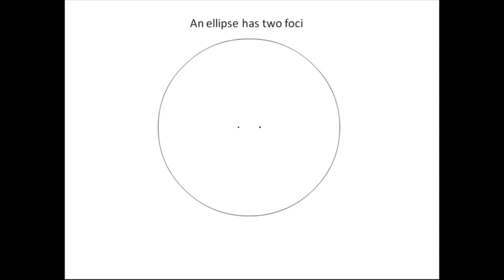This shape here is an ellipse, and an ellipse has two foci. Foci is the plural of focus. So there's one focus, there's another focus. An ellipse has two foci. And Kepler's first law says that planets move around the sun in elliptical orbits with the sun at one of the foci.